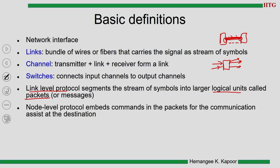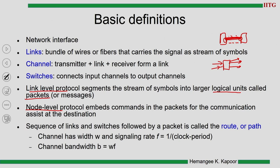The node-level protocol embeds all the commands in the packet: how it should transfer, what route it should follow, what control information it carries, what the error correction code is, and what the priorities are. In a bigger network, we have links, channels, and switches connected to the source and destination nodes. How a packet or message moves from source to destination is called the route or path of the packet — it is the sequence of links, nodes, and switches through which the packet flows to reach its destination.